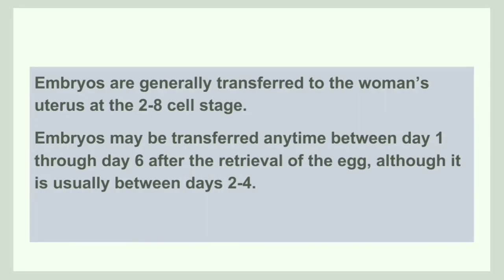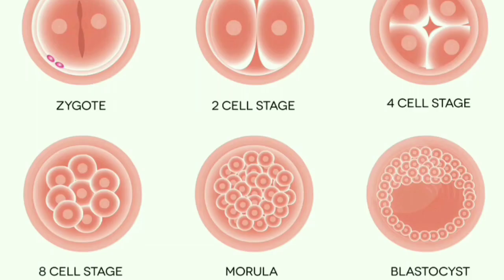Embryo transfer is carried out when the embryo is at the 2 to 8 cell stage. It can be transferred from day 1 to day 6, and it is usually carried out at days 2 to 4. This diagram shows the embryo between the 2 cell stage and 8 cell stage, during which the embryo transfer occurs.